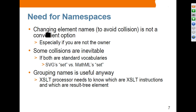Grouping names is useful anyway. For example, an XSLT processor needs to know which are the XSLT instructions and which are the result tree elements. We are going to talk about XSLT in detail later on. In general, grouping names is useful, in the same way that grouping Java classes into packages is useful.